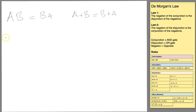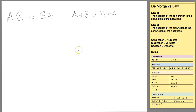The next common rule is the associative laws. This is where you can just basically change the order of any AND or any OR, and it doesn't matter what order you put those letters in — the result is always going to be the same. The third law, which is always the same as normal algebra, is the distributive law.